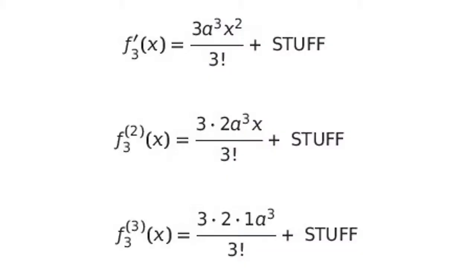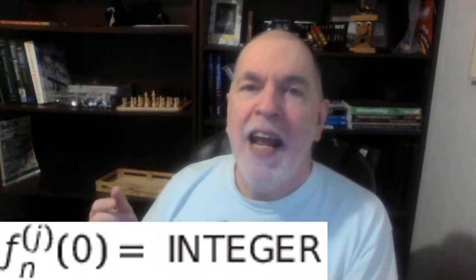So let's see what this looks like. The first derivative ends up being 3a cubed times x squared all over the factorial of 3, plus a bunch of other polynomial terms in x. Then we take the second derivative and finally the third derivative — the x disappears, except for the terms where it still exists, so that all becomes zero when x is zero. Notice that the 3 factorial and the coefficients 3, 2, and 1 in the numerator cancel each other out and we're left with a cubed. Something similar will happen for any value of n, so all of the derivatives will be either zero or have some integer value when x is zero.